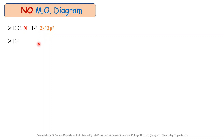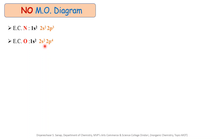The electronic configuration for the oxygen atom is 1s², 2s² and 2p⁴. There are two shells in which the electron is distributed for oxygen also. The first shell has two electrons (1s²) and the second shell has six electrons (2s² and 2p⁴). The valence shell 2s and 2p electrons participate in the bonding. We write the valence shell electronic configuration for nitrogen and oxygen: for nitrogen, 2s² and 2p³; for oxygen, 2s² and 2p⁴.